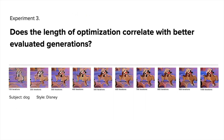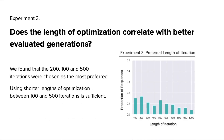For the third experiment, we wanted to investigate, on average, how many iterations are needed to get a favorable result. Our specific research question was: does the length of optimization correlate with better evaluated generations? To study this, we tested 6 subjects across 12 styles with a constant seed and one variety of prompt permutation. We saved images at every 100 iterations from 0 to 1000, and had annotators annotate these rows for their most preferred generation. We found that the 200th, 100th, and 500th iteration steps were chosen as most preferred, demonstrating that a higher number of iterations does not always correlate with a more desirable generation. We concluded that using shorter lengths of optimization between 100 and 500 iterations is sufficient.